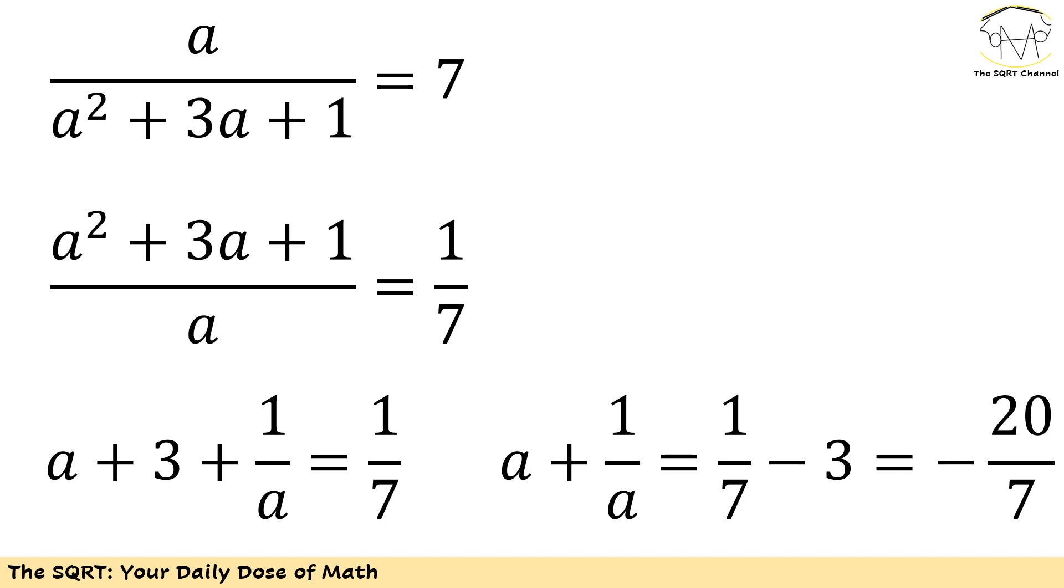For the left hand side I'm going to end up with a plus 3 plus 1 over a equals to 1 over 7. Now if I keep a plus 1 over a on the left hand side I can see that a plus 1 over a is negative 20 over 7.